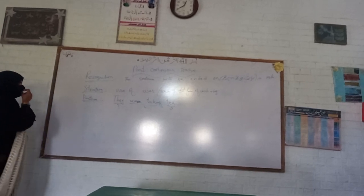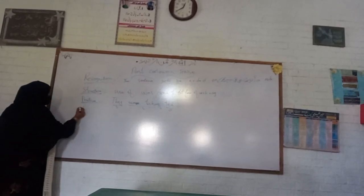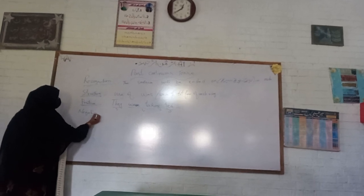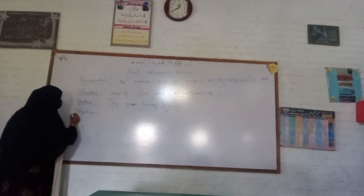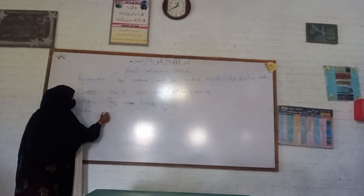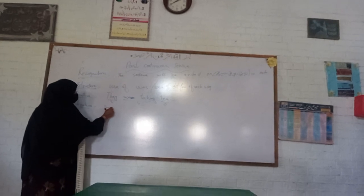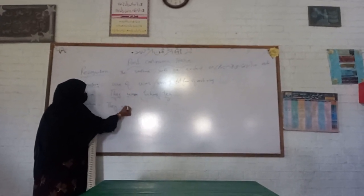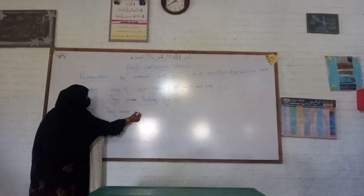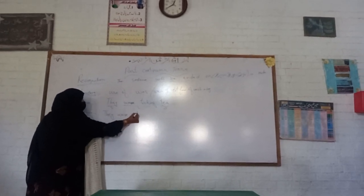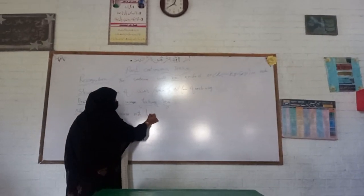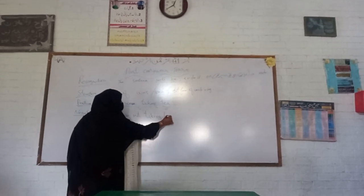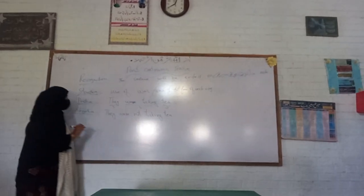Now let's discuss the negative sentence. How can we make this sentence negative? As we decided, we add 'not' after 'were'. So the negative form is: 'They were not taking tea.'